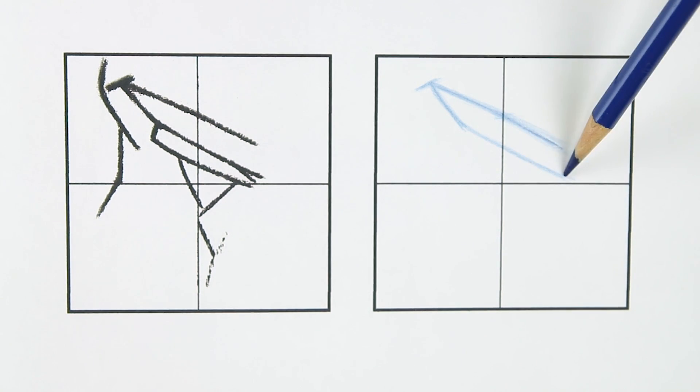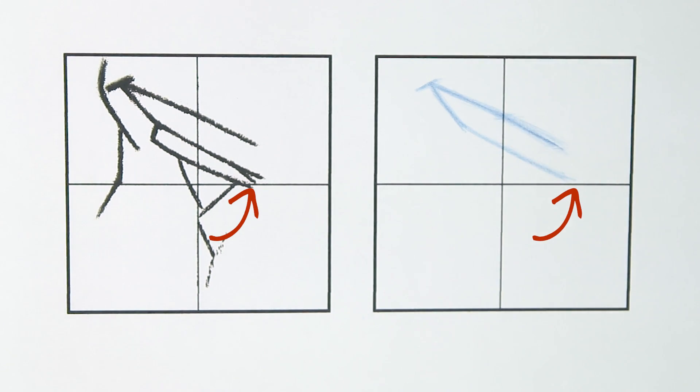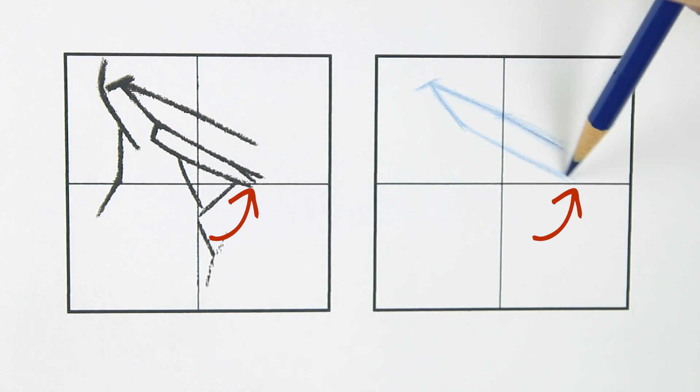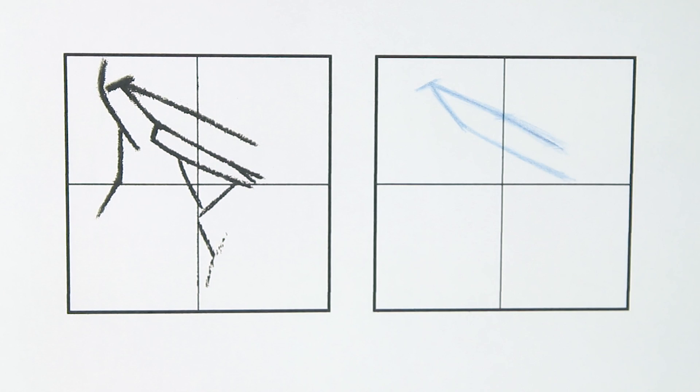I'll also note where it intersects the horizontal grid line if it were to keep going. Again these little observations will really help me to judge the angle of the line. And you'll notice as we continue that this is a huge part of how observational drawing works. We're constantly making observations about where one line intersects with another or how one detail aligns with another detail and using these observations to keep our drawing accurate.